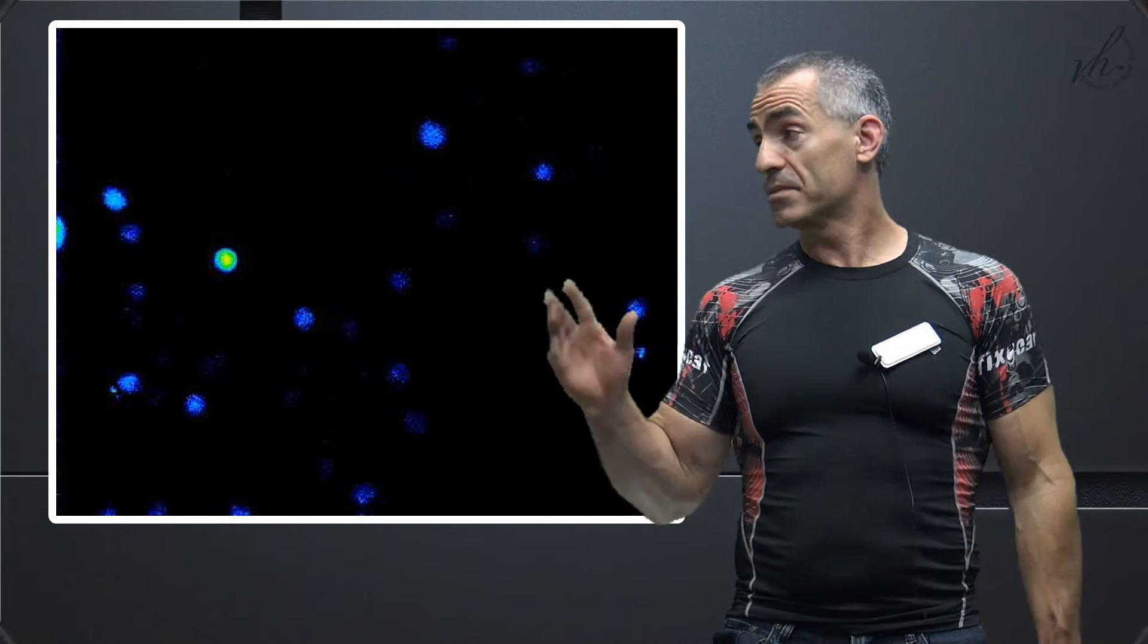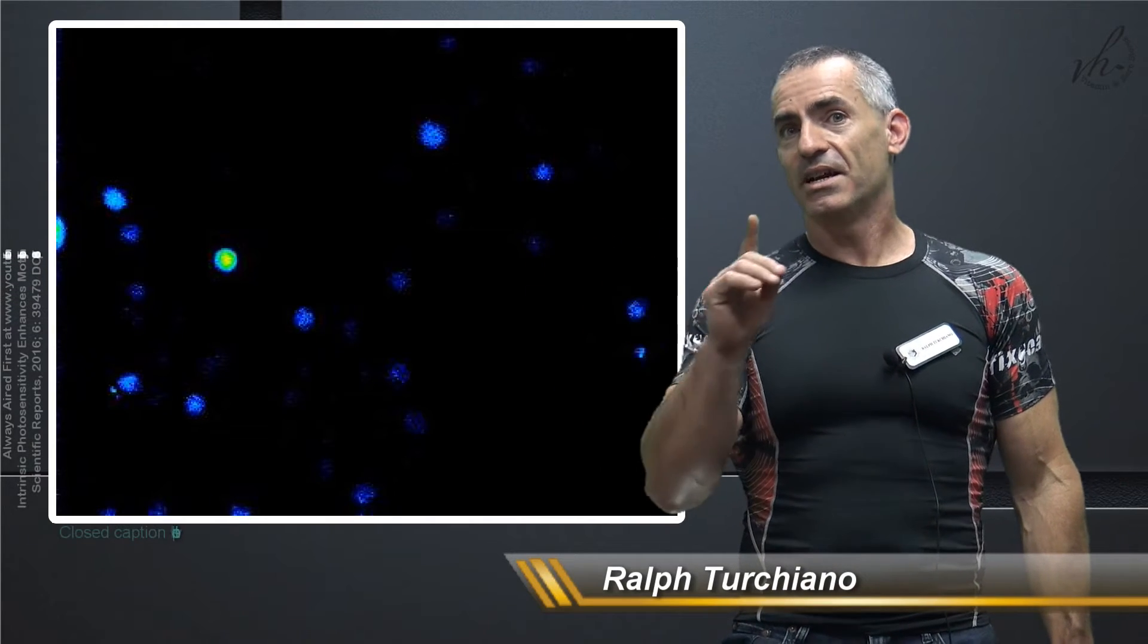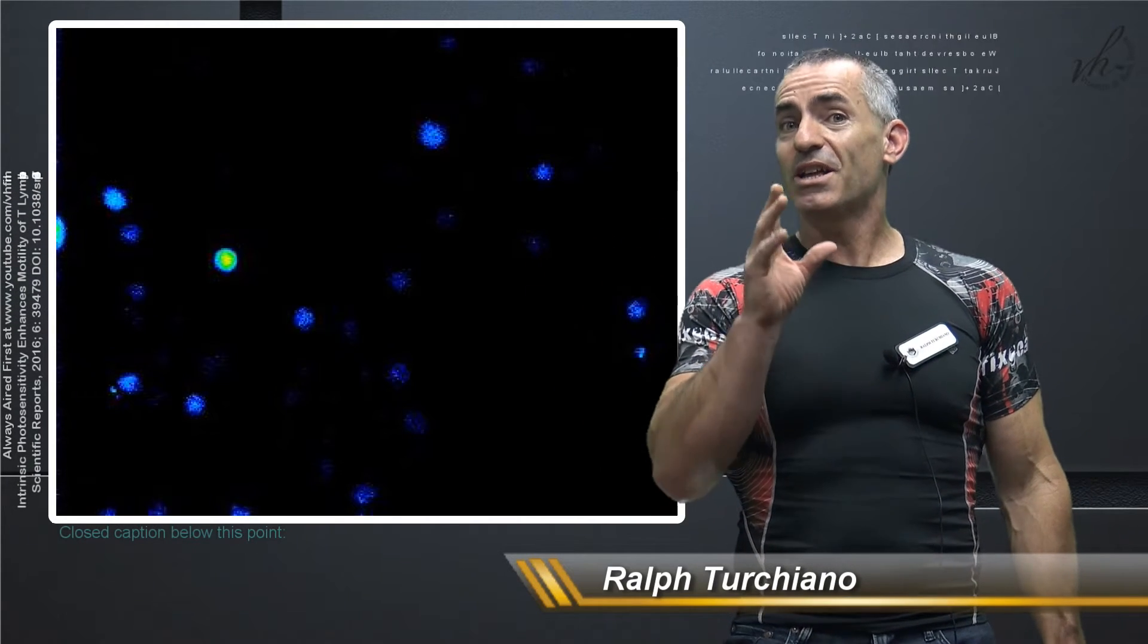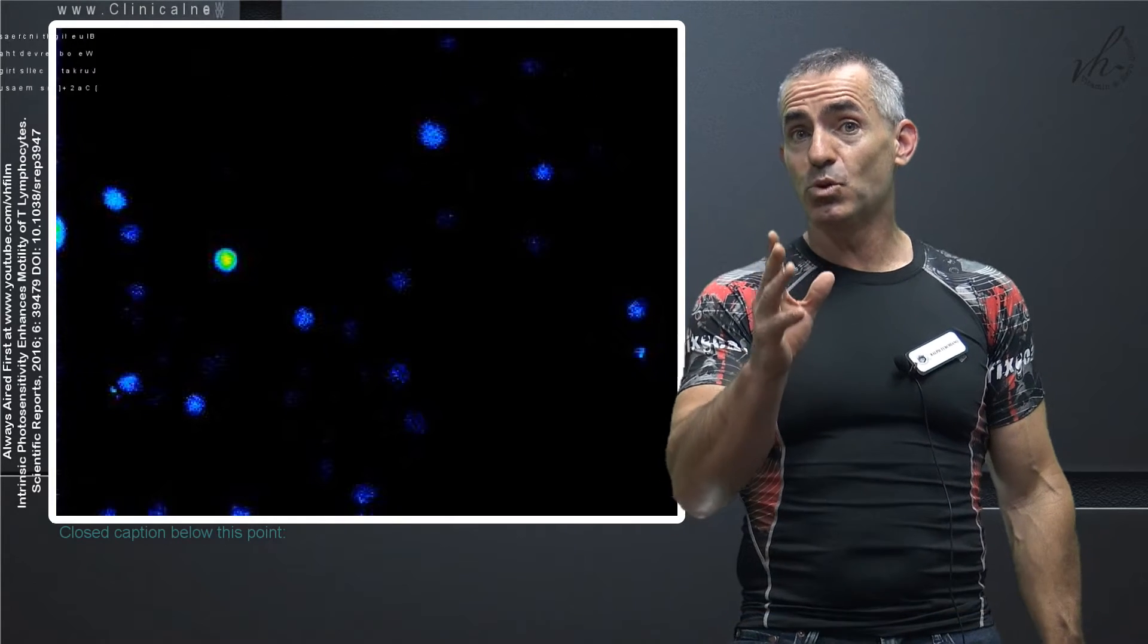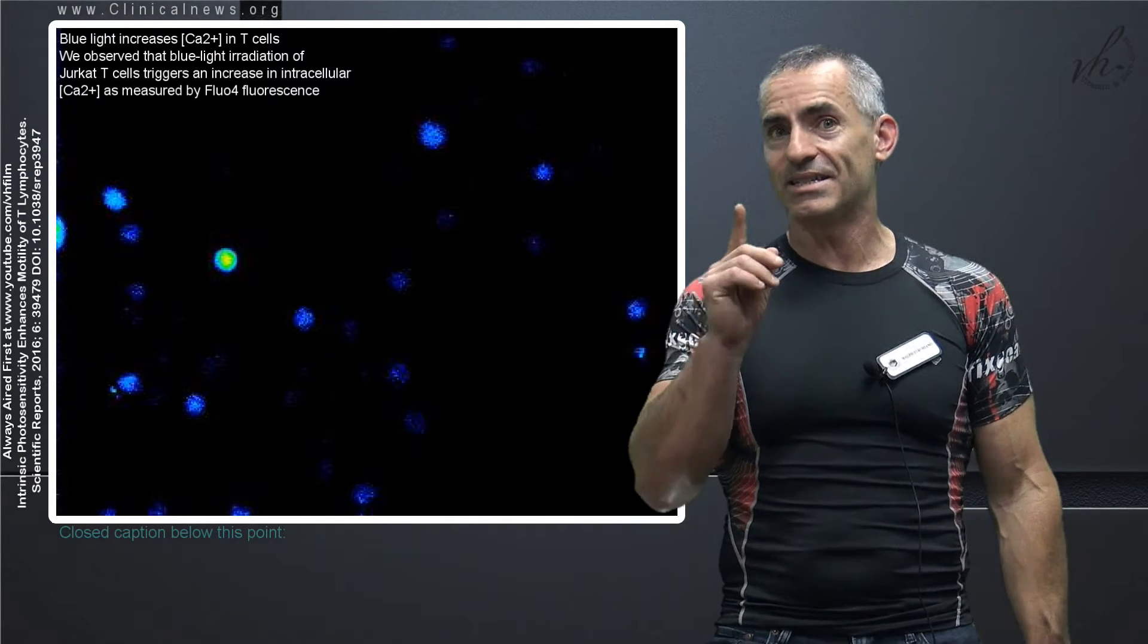You want to see something incredible? You see the picture over here? The picture over here in the dark are basically dormant T cells. Now watch what happens. They're going to expose these T cells to blue light which is commonly found in sunlight.